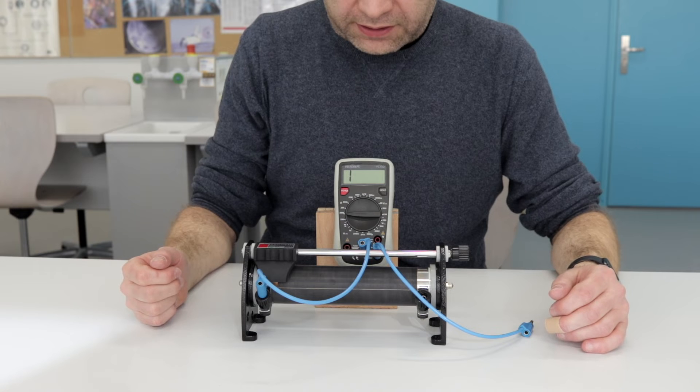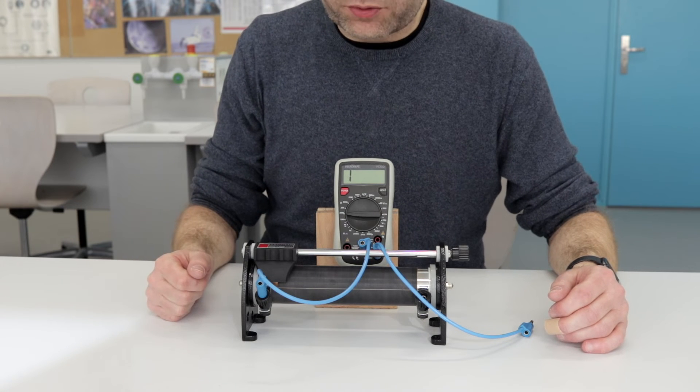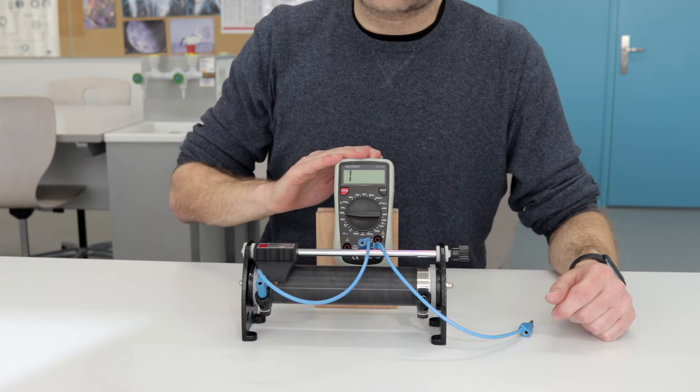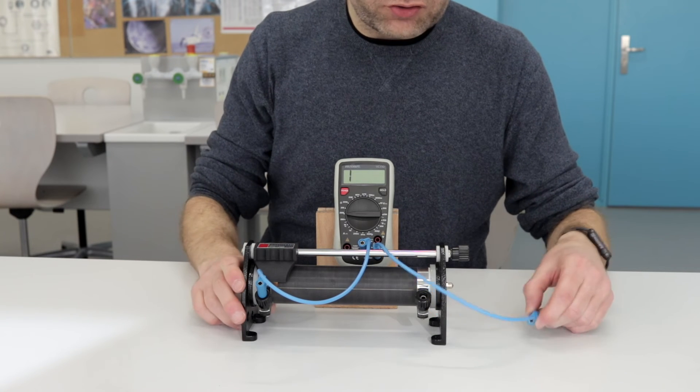Another way of showing that the resistance of this variable resistor is changing is to set up the multimeter as an ohmmeter and directly measure the resistance.